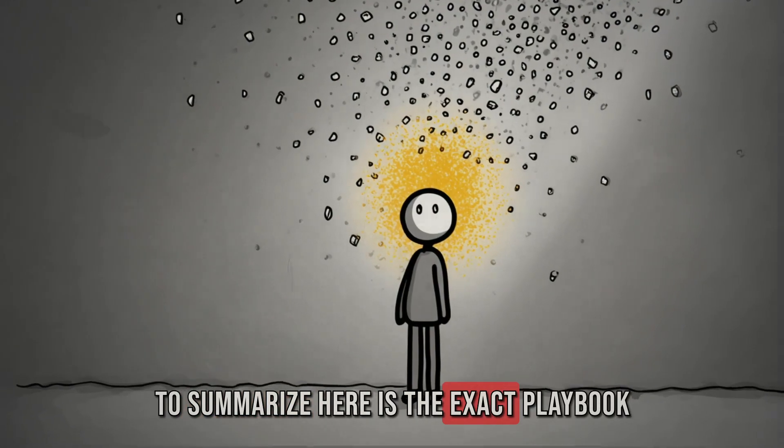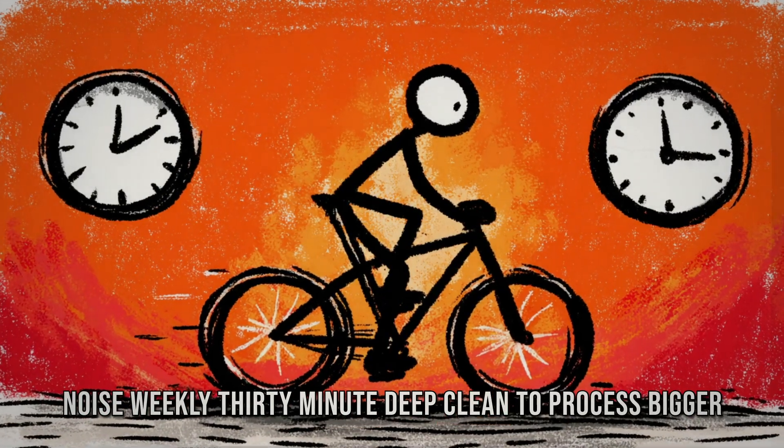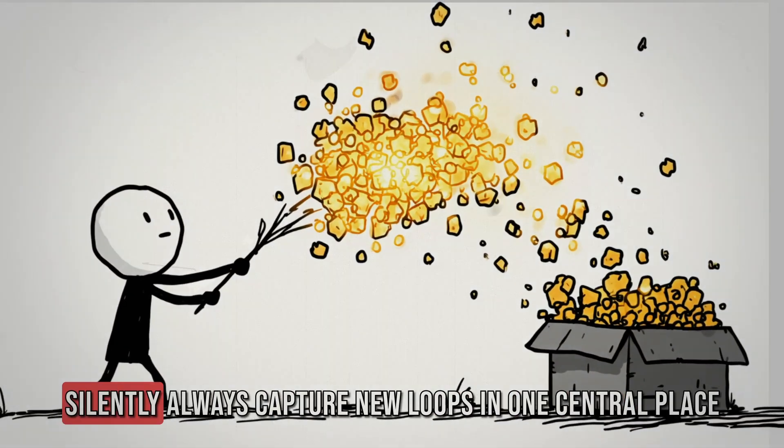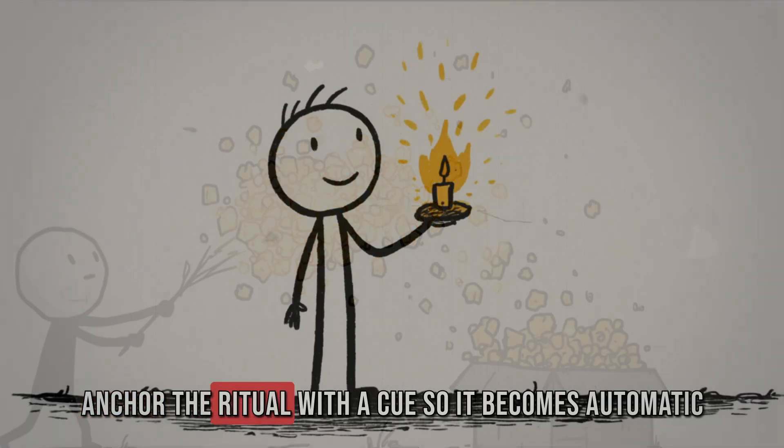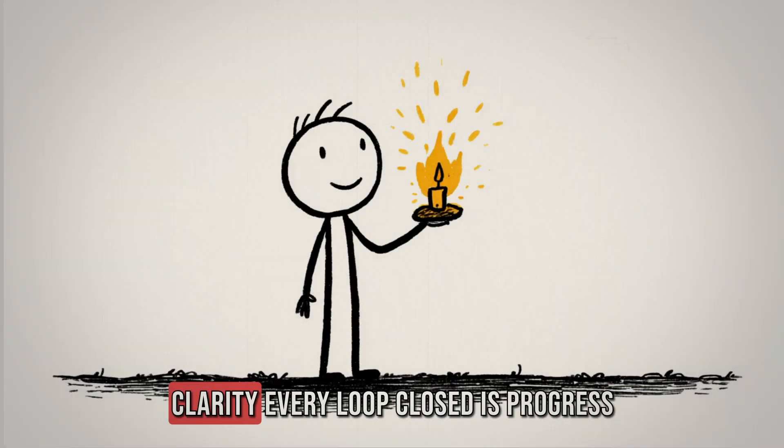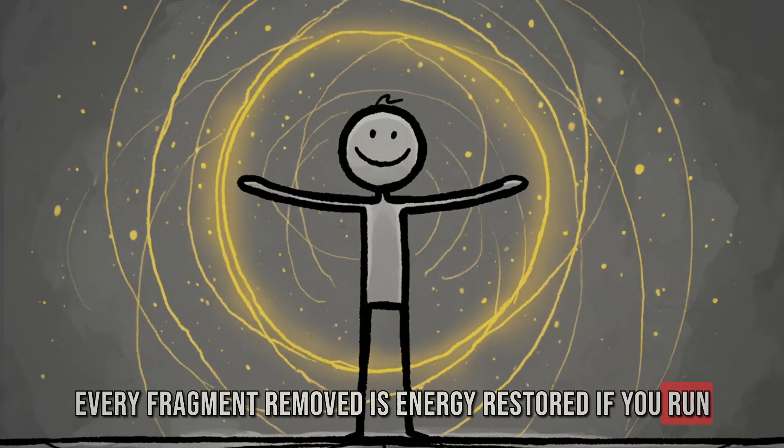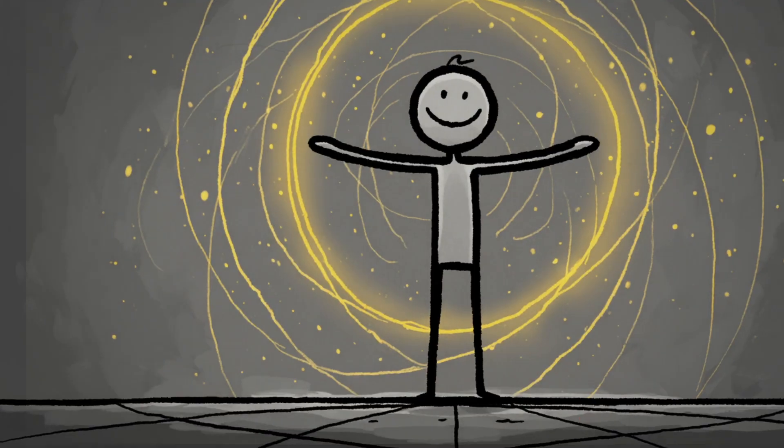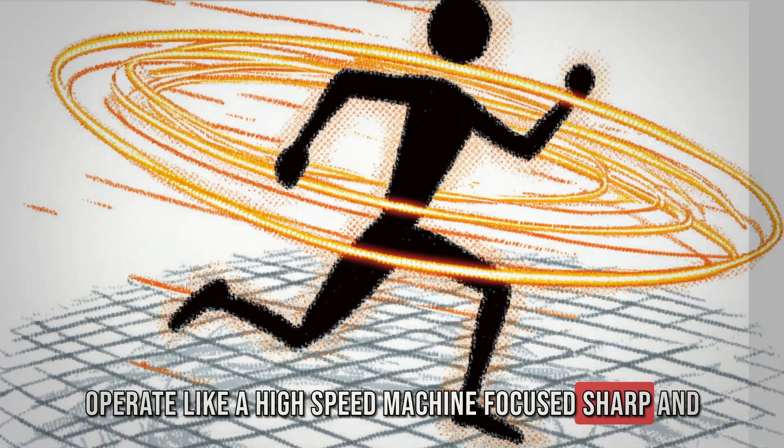To summarize, here is the exact playbook. Daily 10-minute defragmentation to clear the day's noise. Weekly 30-minute deep clean to process bigger commitments. Monthly overhaul to close major loops that drain you silently. Always capture new loops in one central place. Always process them in a batch. Anchor the ritual with a cue so it becomes automatic. And remember, the goal is not perfection. The goal is clarity. Every loop closed is progress. Every fragment removed is energy restored. If you run this system consistently, your brain stops working against you and starts working for you. Instead of lagging like a cluttered computer, you operate like a high-speed machine, focused, sharp, and efficient.